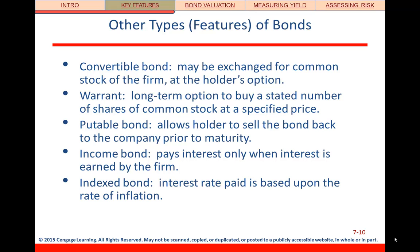Before getting into bond valuation, let's wrap up some additional bond features. A convertible bond means the bond owner could exchange that bond for stock, with specific directions on how and under what conditions that exchange can happen. A warrant is an option to buy stock — similar to a convertible but not exactly the same in execution. A putable bond is like an option, but instead of having the option to buy, it's the option to sell.